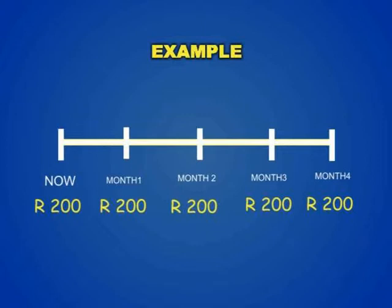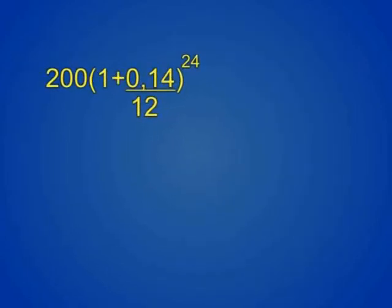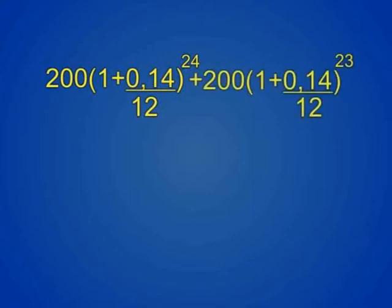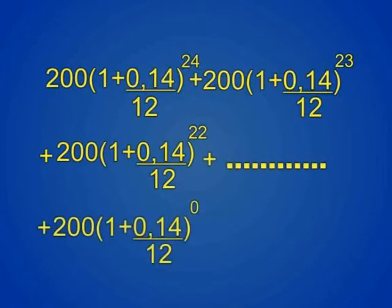Notice how tedious this will become, as you will have to add up all of the different future value amounts. It will be 200 Rand × (1 + 0.14/12)^24, plus 200 Rand × (1 + 0.14/12)^23, plus 200 Rand × (1 + 0.14/12)^22, and so on, up until we get to 200 Rand × (1 + 0.14/12)^0.